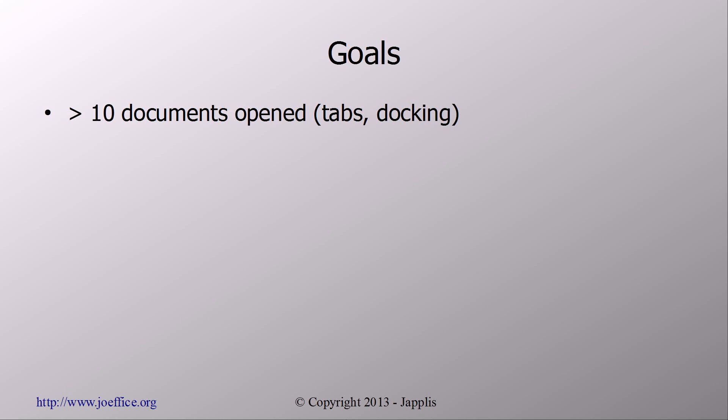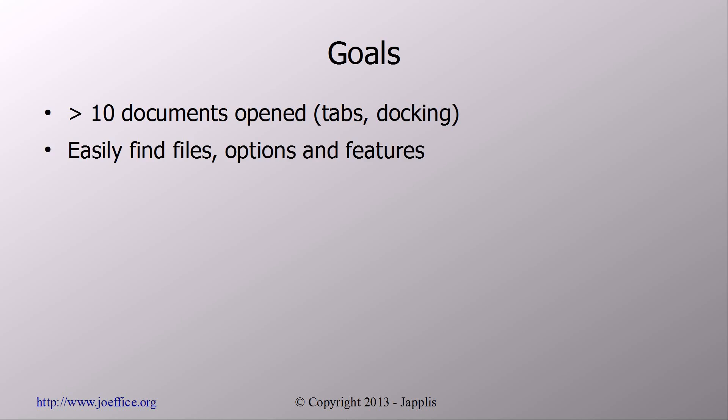One of the goals is that it should be very easy to have more than 10 documents open. With other office suites, if you have 10 documents open it's quite difficult to navigate between them. That shouldn't be the case — you should have documents open in tabs, with docking and so on. It should also be very easy to find files, options, and pictures. People waste a lot of time figuring out how to do things in their document or presentation, and if you count the time wasted across all users it would be many, many years.